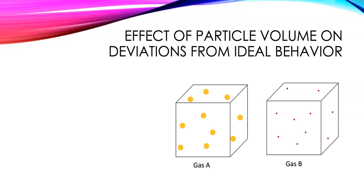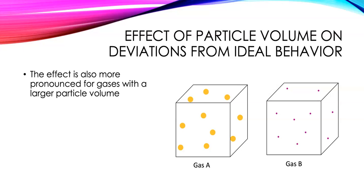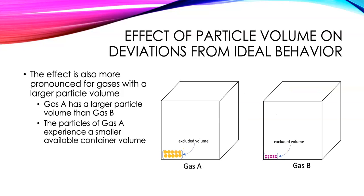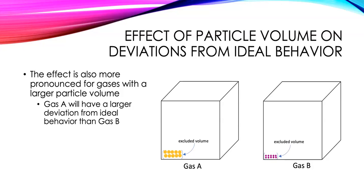We also see that the volume of the particles themselves has an effect. Particles with a larger volume are going to occupy a larger excluded volume. Looking at gas A (the yellow, larger particles) versus gas B (the smaller particles), gas A has a larger particle volume than gas B. Because the particles for gas A are bigger, they occupy a larger fraction of the container, so the molecules of gas A have a smaller available volume and we get larger deviations for gas A compared to gas B.